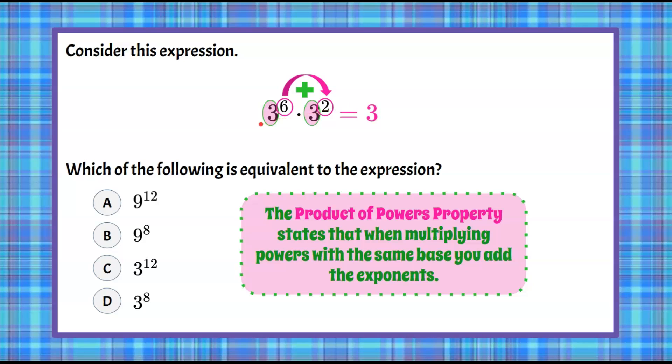So when we go to simplify this, you keep the base, and then you add the exponents, 6 plus 2, and you get 3 to the 8th. So thinking about this as we have 6 threes, and 2 threes, and 6 and 2 are 8, so we have 8 threes.